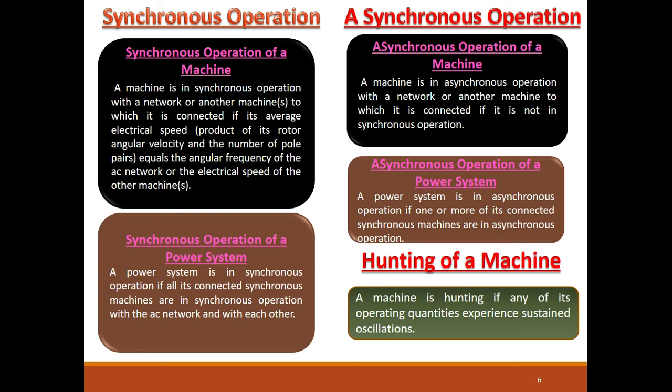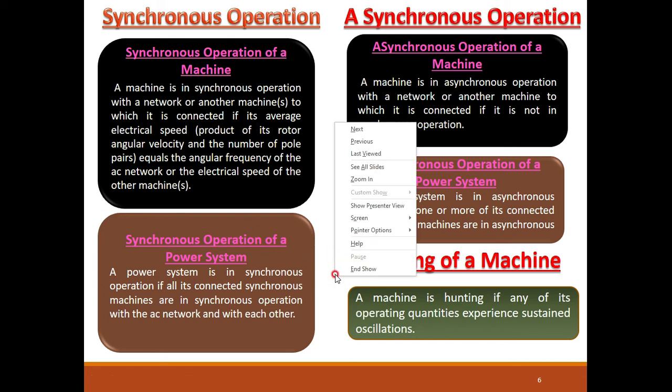One more definition is hunting of a machine. A machine is hunting if any of its operating quantities experience sustained oscillations. The operating quantities include voltage, current, real power, and reactive power. In the case of hunting, the operating quantity that changes is the angle delta. This is a brief introduction to power system stability. In the next session, we will continue with more depth on stability definitions and the different types of stability studies.